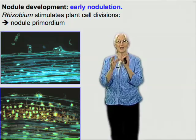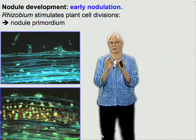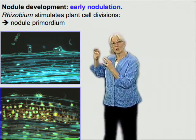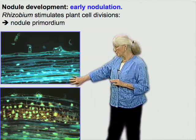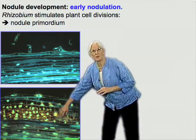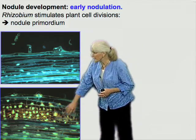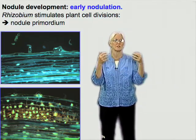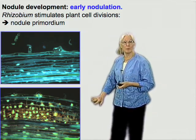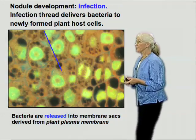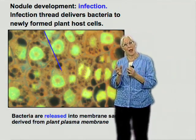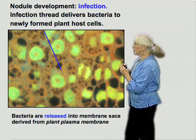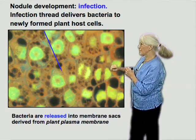But if the correct rhizobium — and this happens only if you have the right species of bacterium for that plant — is infected onto that plant, you get this. You can see mitotic figures happening here. The cells in the inner cortex of the root have begun to divide. They're going to form what's called a primordium. Those cells continue dividing, and the infection that started with an infection thread continues all the way through into these newly dividing cells.